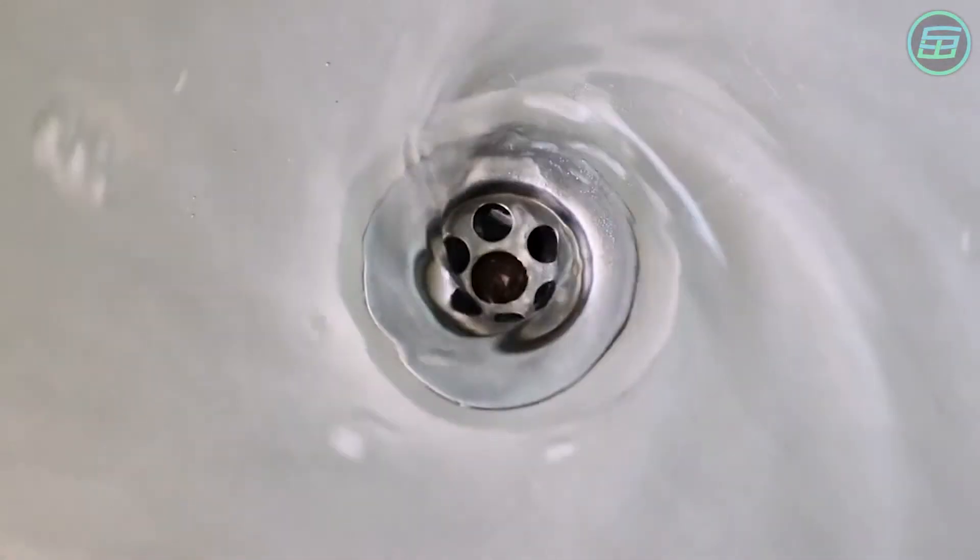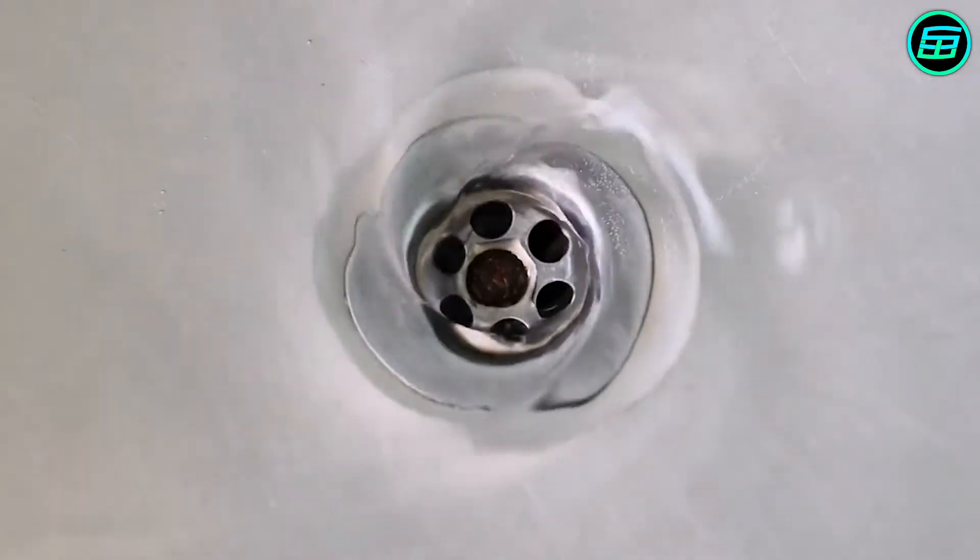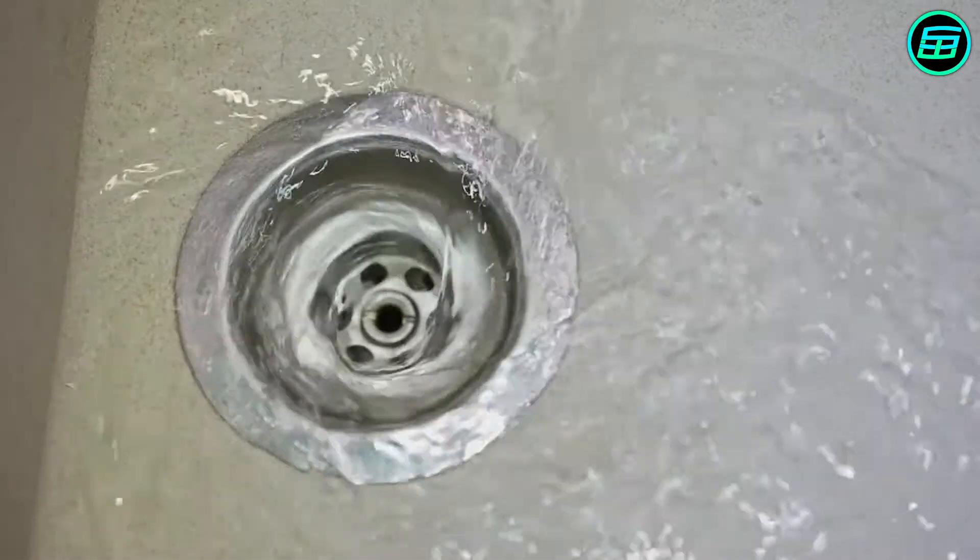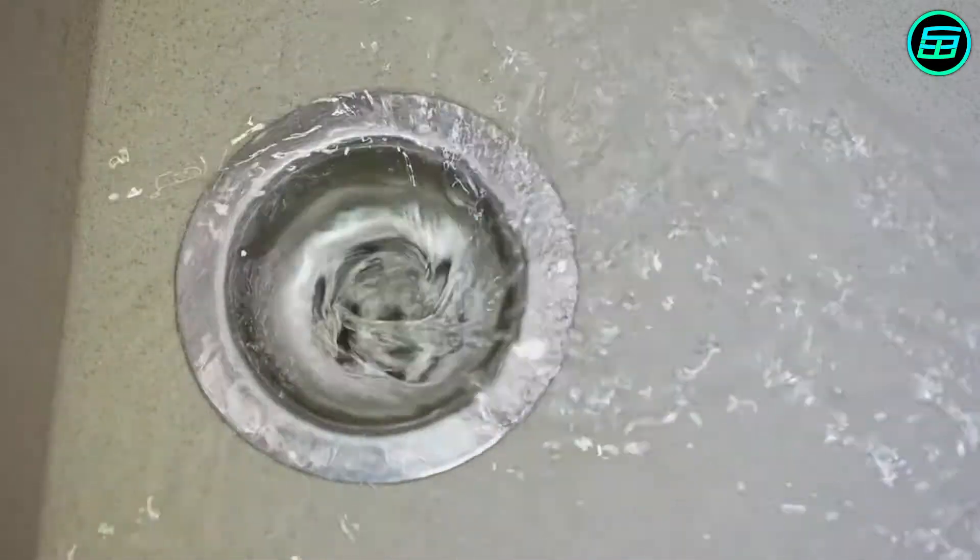Does the water really spiral one way down the plug hole of a bath in the northern hemisphere and the other way in the south? Folk wisdom has always suggested that this might be so, but has anyone bothered to check?